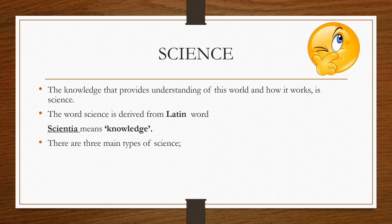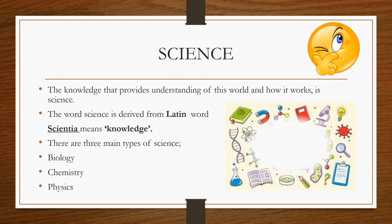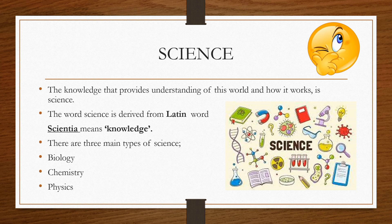There are three main types of science: Biology, chemistry and physics. Biology deals with living organisms and life. Chemistry deals with matter and energy.